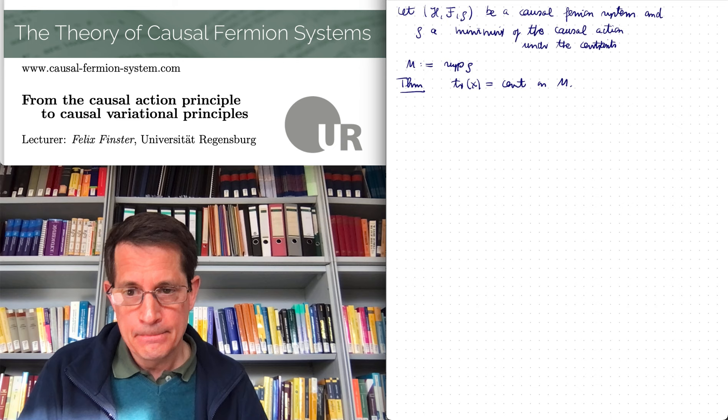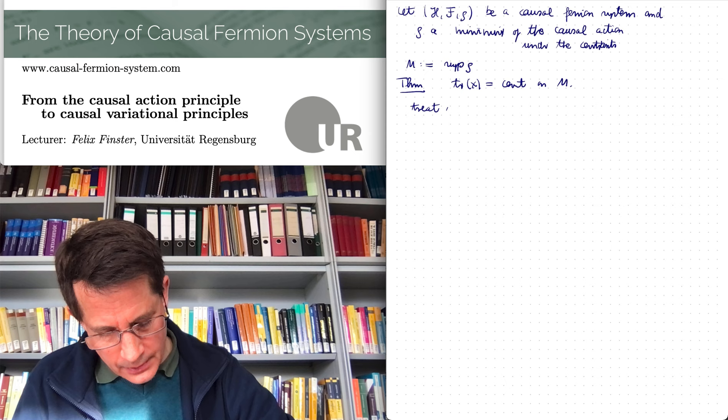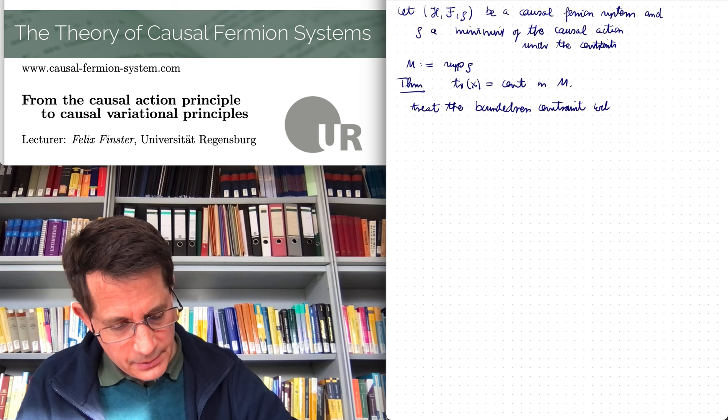In order to get to causal variational principles, one needs to do a few additional things. First of all, we treat the boundedness constraint with a Lagrange multiplier.